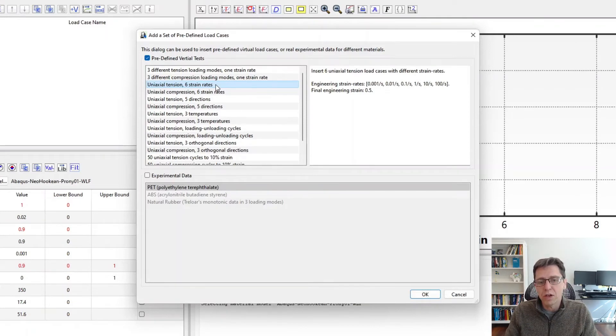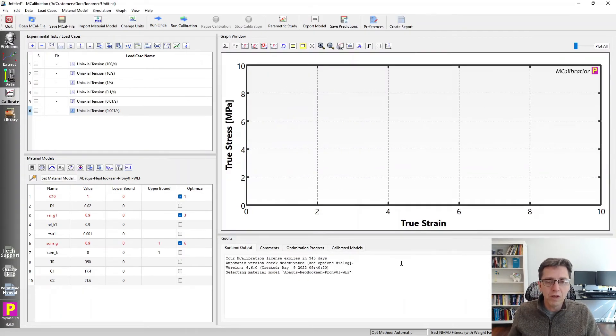So these are virtual tests. So what happens if we use this material model in uniaxial tension at three different strain rates. If you have real data, of course, you can insert that here. So if I run this once, you will see we did a test here.